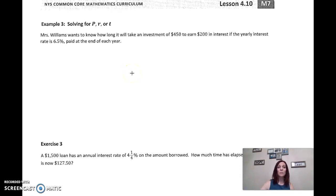All right. So in this example, it says Mrs. Williams wants to know how long it will take for an investment of $450. There's our principal to earn $200 in interest. That's our interest. If the yearly interest rate is 6.5%. So our rate is 6.5% as a decimal, that becomes 0.065 and is paid at the end of each year. We don't know what T is.